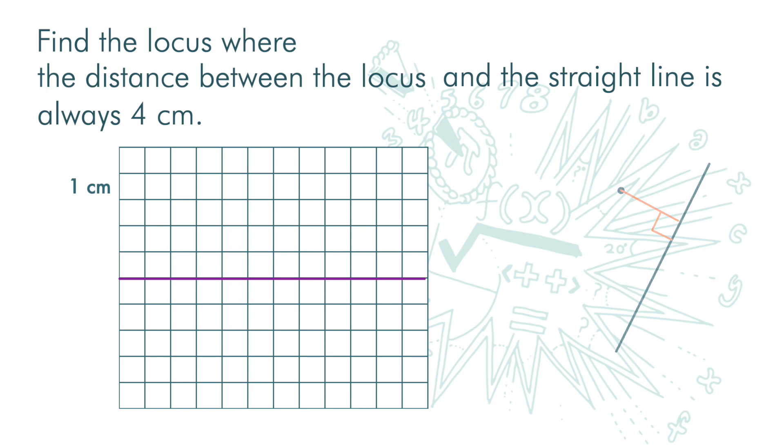So let's come back here. Since we have a horizontal line on a grid, the distance of 4 cm is simply 1, 2, 3, 4. Here. So are all these points.